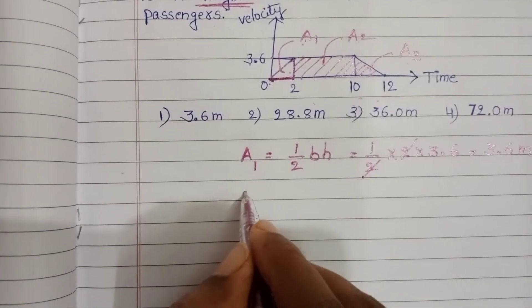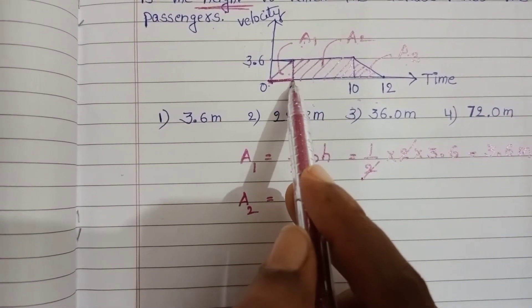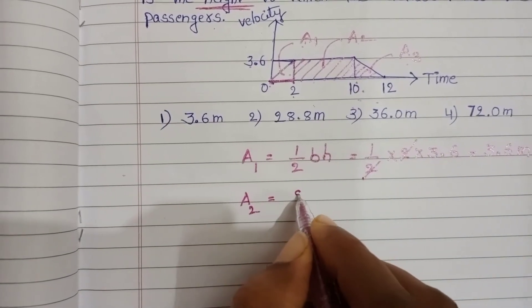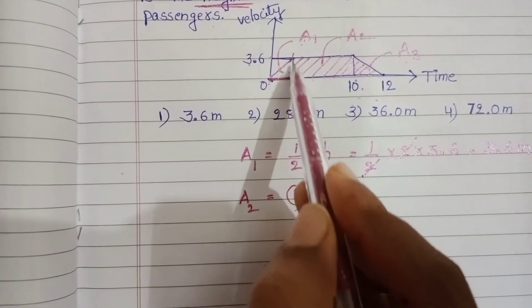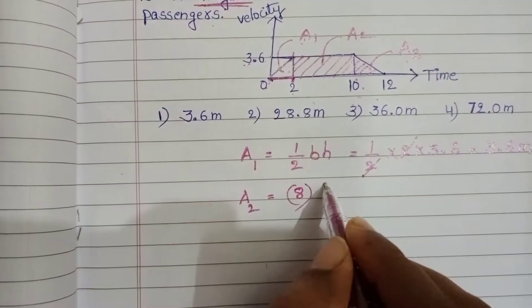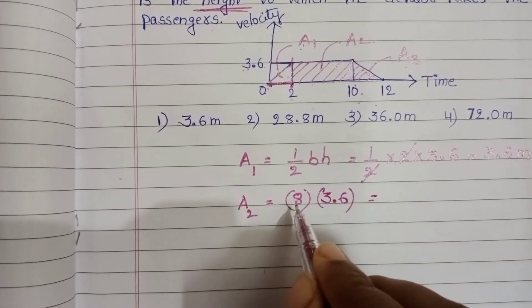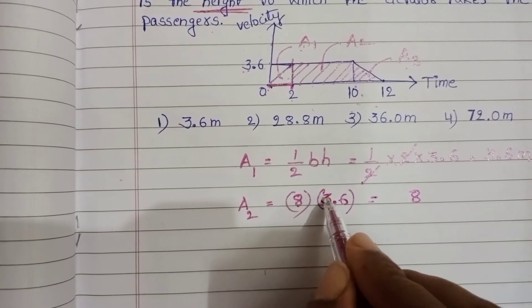Next find out A2, rectangular in shape. Here 2 to 10 seconds, 10 minus 2, so 8 into this part 0 to 3.6, so into 3.6. Multiply these two: 8 times 6 is 48, 8 times 3 is 24, plus 4 is 28. So 28.8 meters.